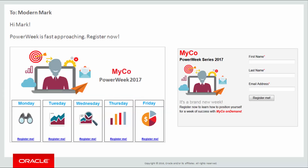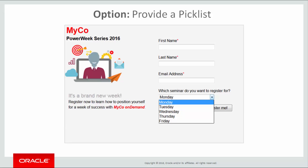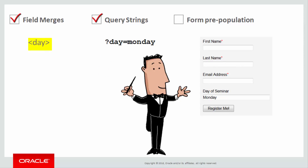The Myco team considered a few options for including the session day on their form. One option was to create five landing pages with unique URLs, but the Myco team wanted to avoid having to manage so much content. Another option was to add a picklist field to their form so contacts could select the day of the seminar they want to register for. But Myco wanted to minimize the number of fields in the registration form, because studies have shown that less is often more when it comes to the number of fields on a form. So what did they do? This is where field merges, query strings, and form pre-population come into the picture.